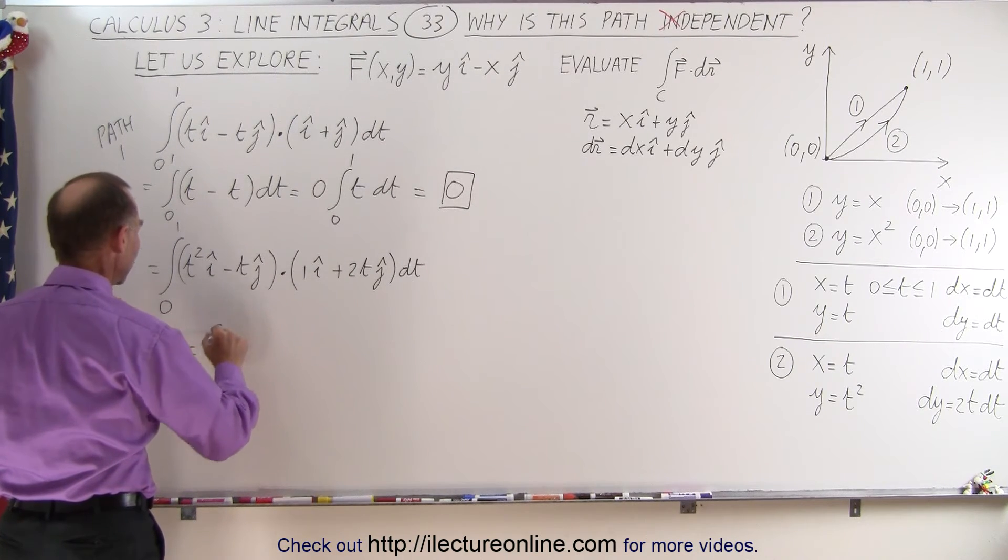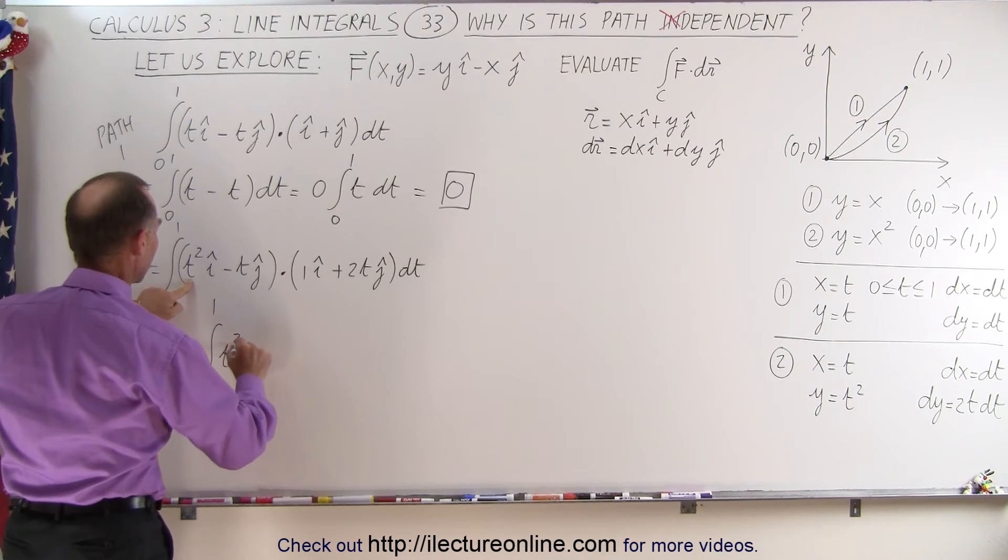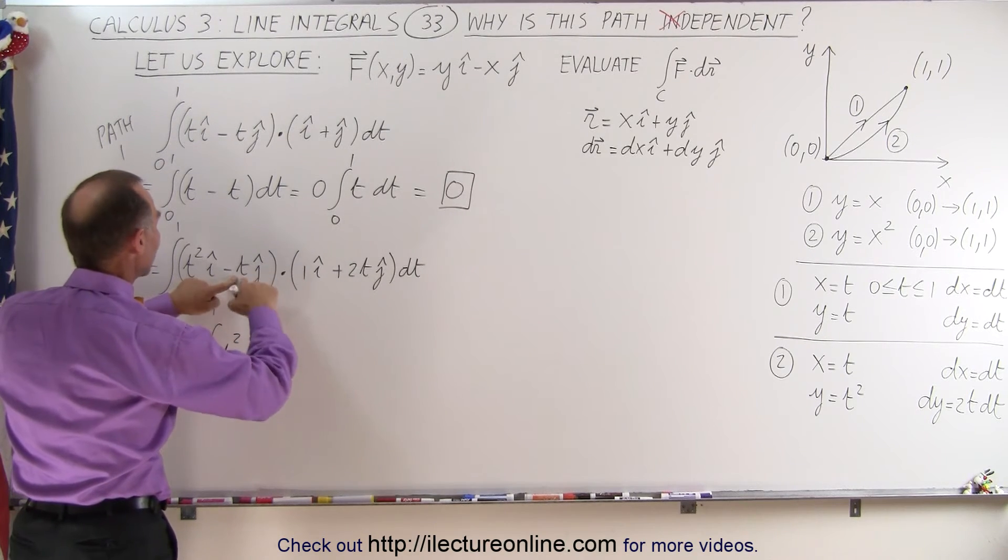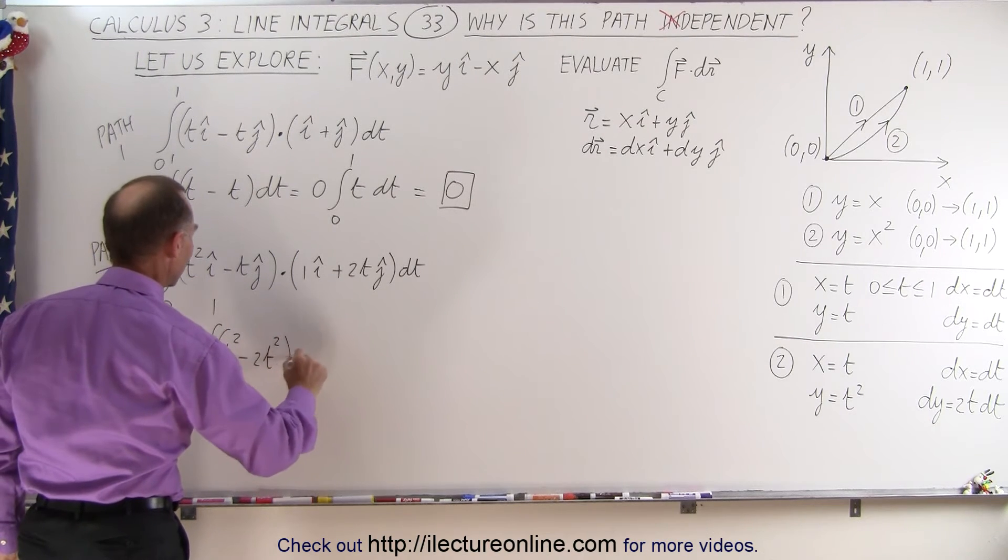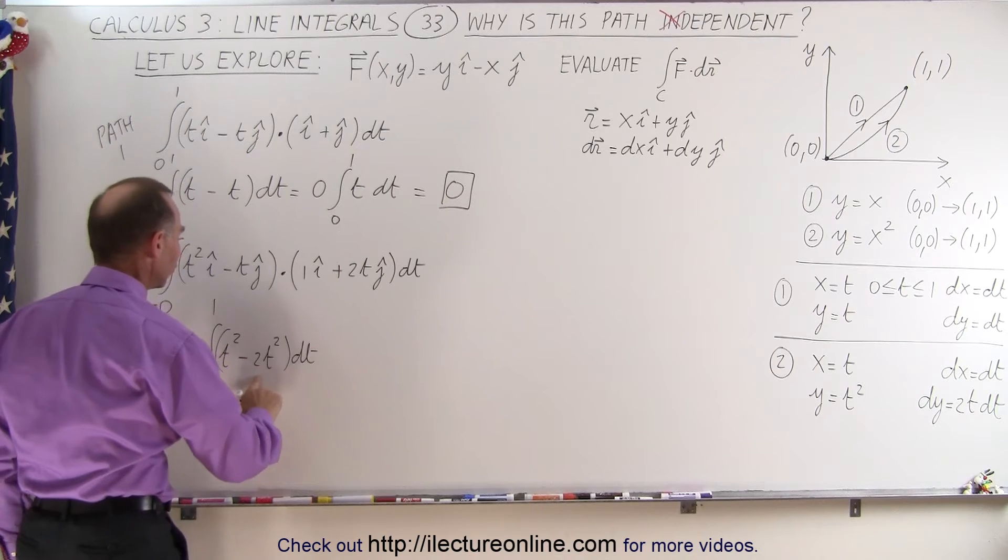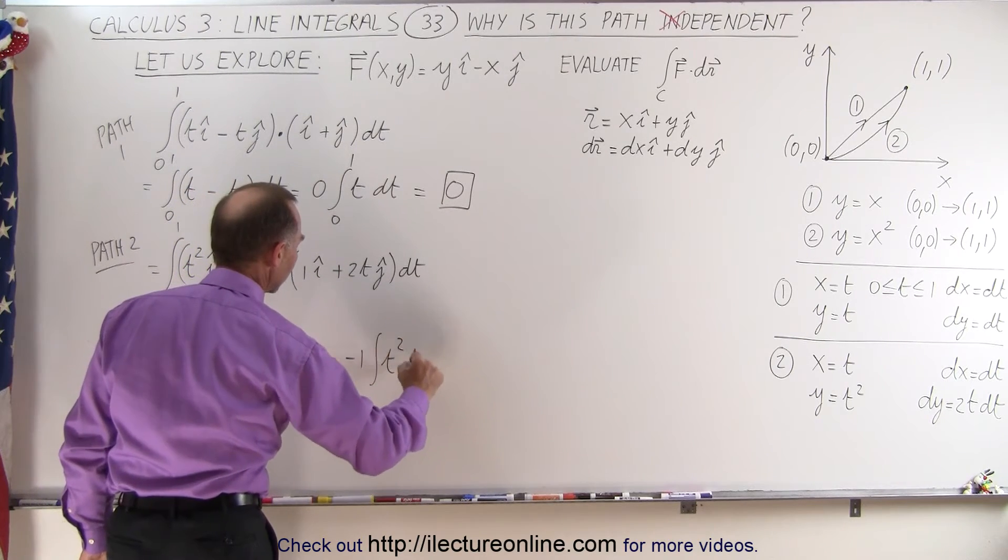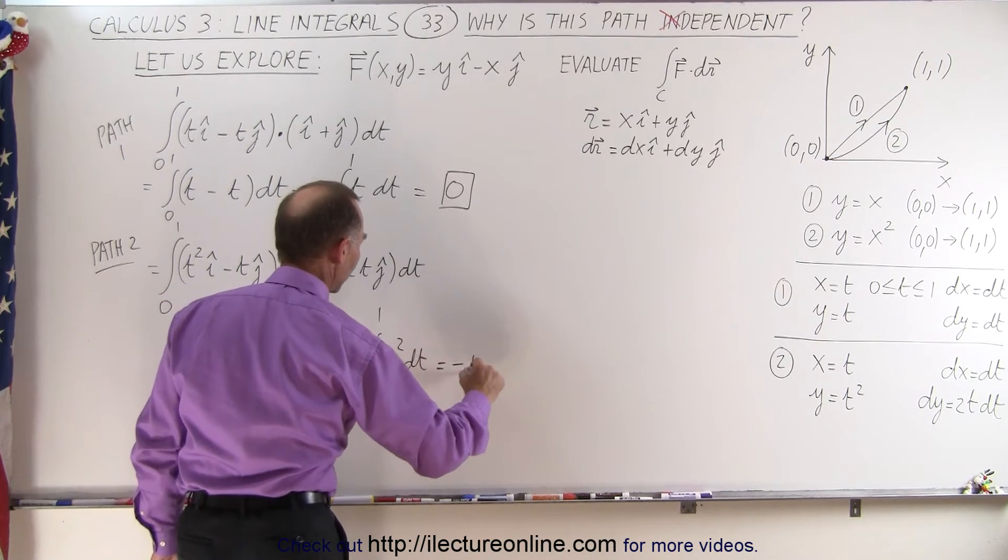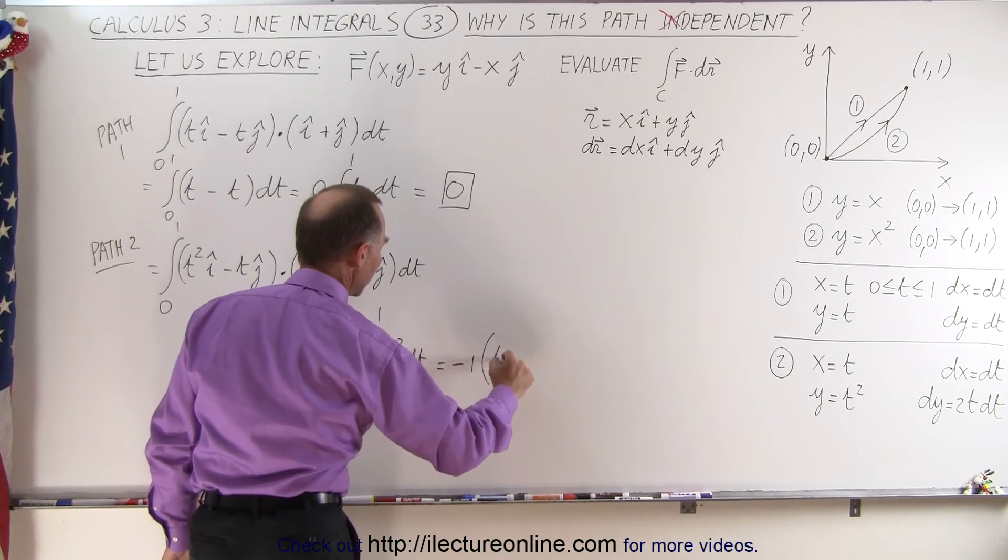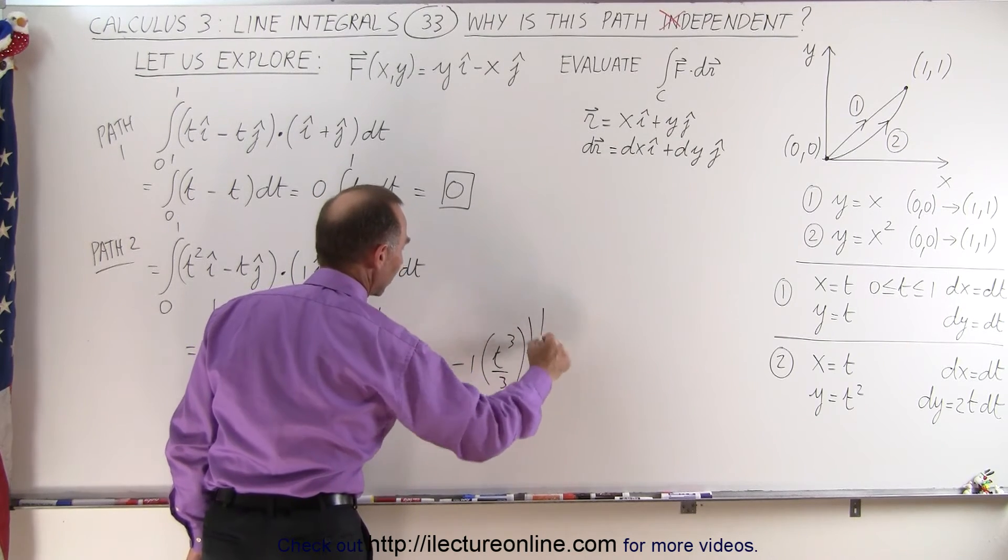When we multiply this together, the i's and the j's drop out. We end up with the integral from 0 to 1 of 1 times t squared minus 2t times t squared times dt. So 1 minus 2, that's equal to a minus 1 times t squared dt from 0 to 1.